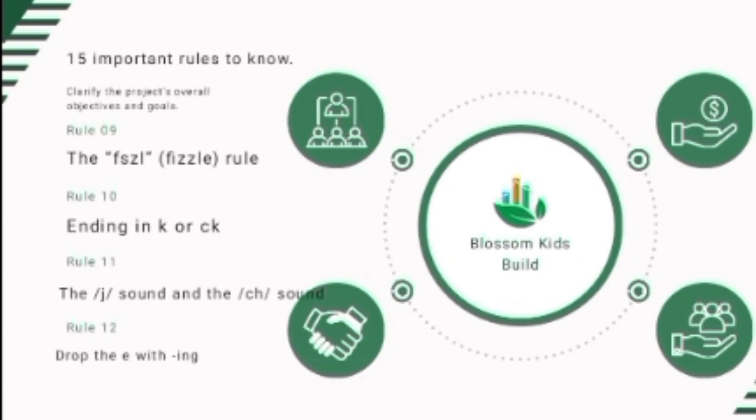Rule number twelve: drop the E with -ING. When a word ends with a silent E, drop the E before adding -ING. For example, 'bike' becomes 'biking,' 'give' becomes 'giving,' 'dodge' becomes 'dodging.' This rule also applies to other suffixes that start with a vowel, like -ED, -ER, -ABLE, and -OUS. For example, 'grievous,' 'excitable,' and 'hoped.'